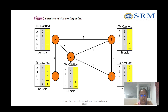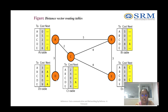For node C's routing table: C to A costs 2, C to B costs 4, C to E costs 4. C cannot reach D directly, so it goes through the next hop A: C to A is 2, A to D is 3, giving a total of 5. The next hop for D is A. This is the routing table of C.